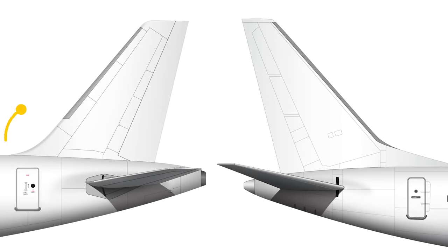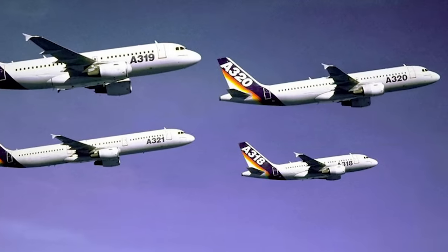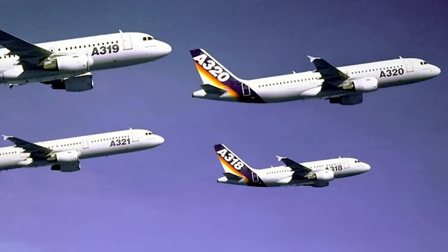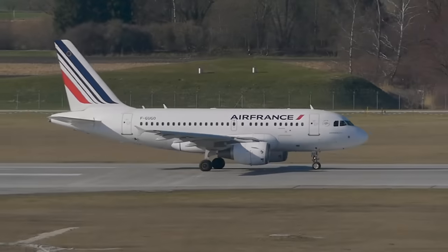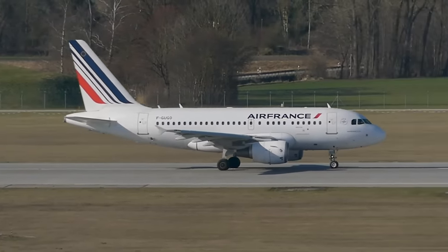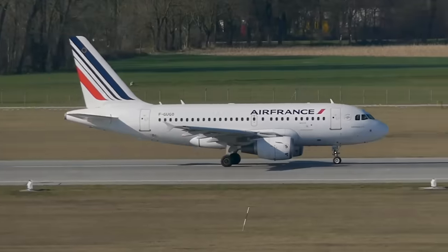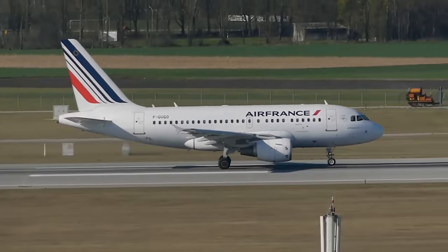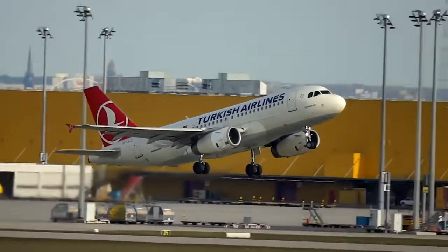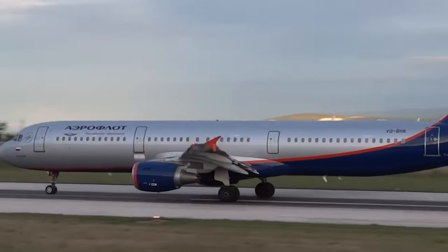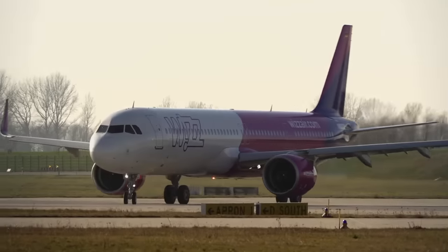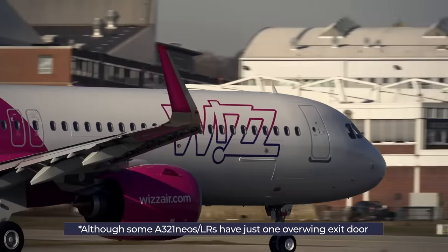The A320 family is identified by its Airbus-style cockpit windscreens with a straight lower edge and a notched corner, a more rounded nose, and the absence of the triangular dorsal fin seen on the 737. Family members — A318, A319, A320, A321, and Neo versions — are best identified by size. The A318 and A319 each have one overwing exit door and two main doors; the A318 has 11 windows in front of the overwing exit, the A319 has 13. The A320 has two overwing exit doors, and the A321CEO has four doors along the fuselage, while the A321LR has three doors plus two smaller overwing exit doors.